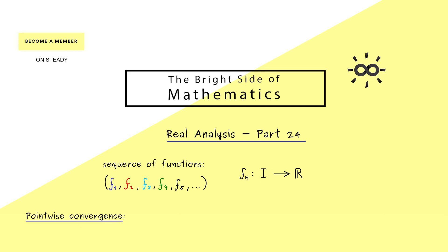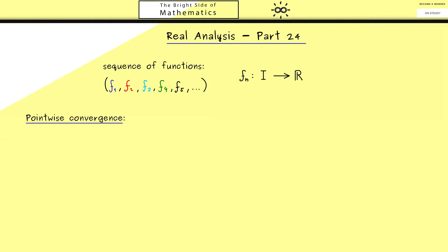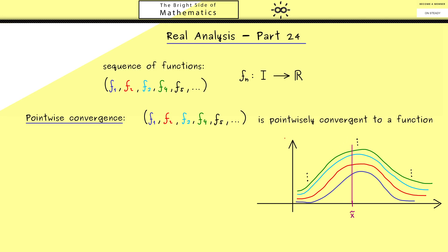It's a very natural notion because you immediately get it when you know how to deal with sequences of numbers. For all the functions here, you can fix a point x tilde and you get an ordinary sequence of numbers for the values of the functions. If this is a convergent sequence, we can define a limit function and call the sequence of functions pointwise convergent to this function.